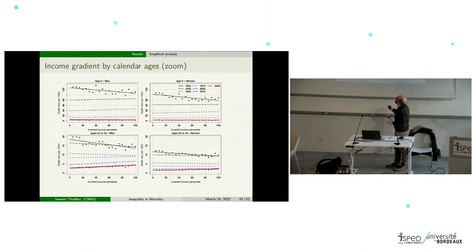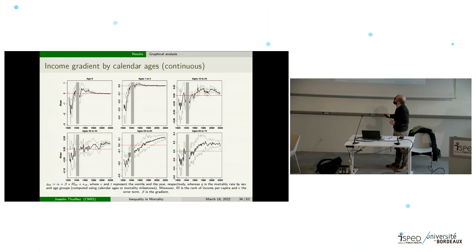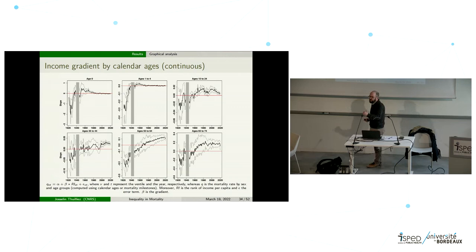The same pattern is found for men and women separately, not only for the general population. When we plot a simple regression with confidence intervals over time, we observe a reversal of the gradient around the 1970s. This is quite surprising — when we began this work we expected the reversal to happen at the start of the 19th century or end of the 18th century, but it seems to be much more recent than expected.